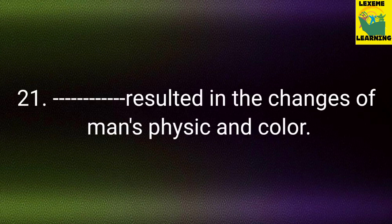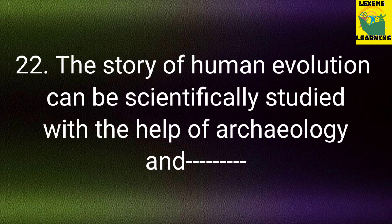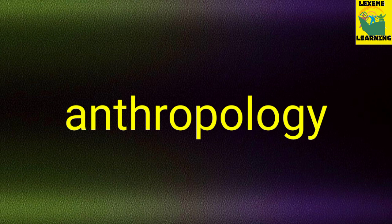Question number 21: Dash resulted in the changes of man's physique and colour. Your answer: climatic changes. Question number 22: The story of human evolution can be scientifically studied with the help of archaeology and dash. Your answer: anthropology.